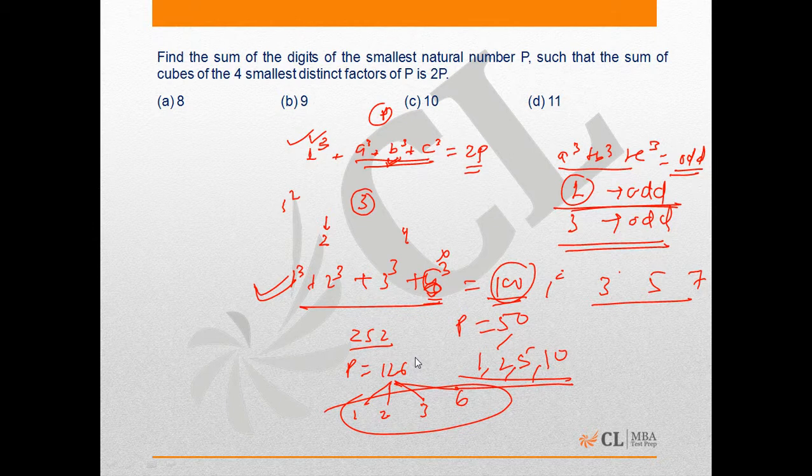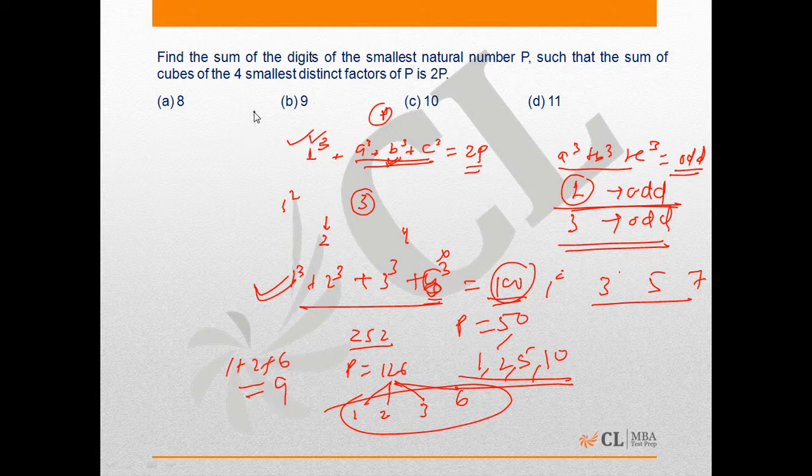Hence, the sum of its digits will be 1 + 2 + 6, that is 9. Hence, option B is the correct answer.